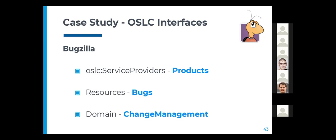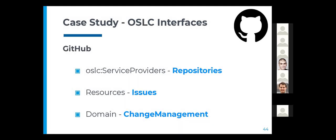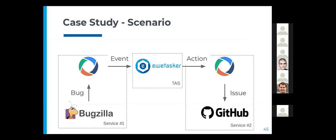Bugzilla already has an OSLC interface available for the OSLC tutorial, where products are the service providers and bugs are the OSLC resources. For GitHub, we defined it in a similar way, taking repositories as service providers and issues as OSLC resources, with the same domain as Bugzilla: change management. This scenario works as follows: when a bug is created, the OSLC interface in front of Bugzilla exposes it as an HTTP resource, as OSLC always does. Then an event is sent to the task automation server to notify of the event — in this case, we use TRS to expose the change as a change event.